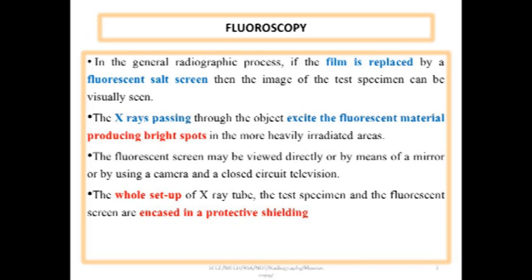In this fluoroscopy process, the normal x-ray films used in radiography process are replaced by a fluorescent salt screen. By the use of this fluorescent salt screen, the end user gets the flexibility of getting the image of the specimen and can visually see it and interpret the results associated with it.